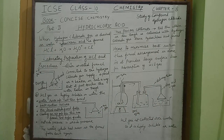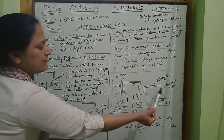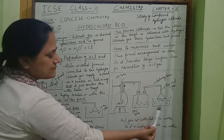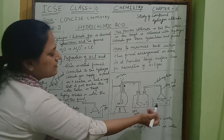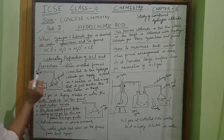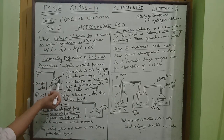This dry hydrogen chloride gas is passed through the delivery tube. Now we are going to convert this hydrogen chloride gas to hydrochloric acid. See this apparatus arrangement — we are using a funnel, and this inverted funnel just touches the water level in the beaker.